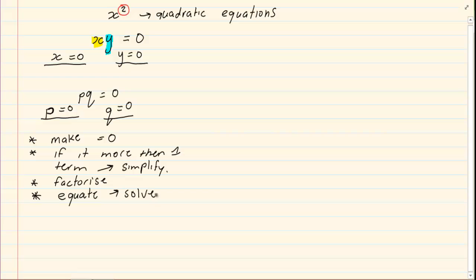Let's take the following example. If you were given x squared is equal to 11x, I need to make it equal to 0. So I'm going to bring it all over to one side which will give me x squared minus 11x is equal to 0. If it's more than one term, then I can simplify. But this is in its simplest form. There's no brackets in the question, so I start factorizing.